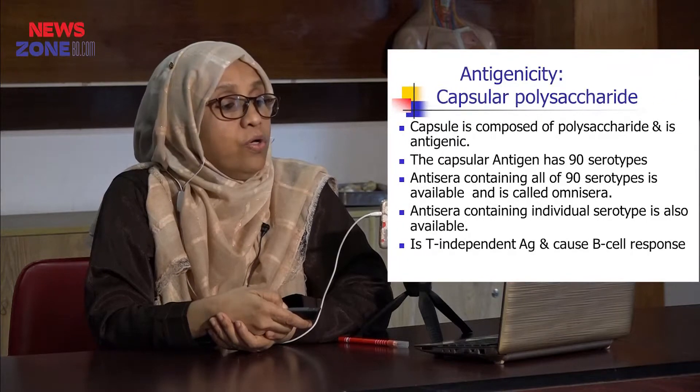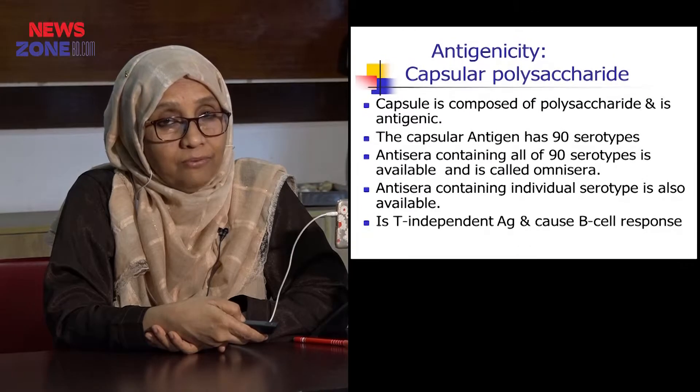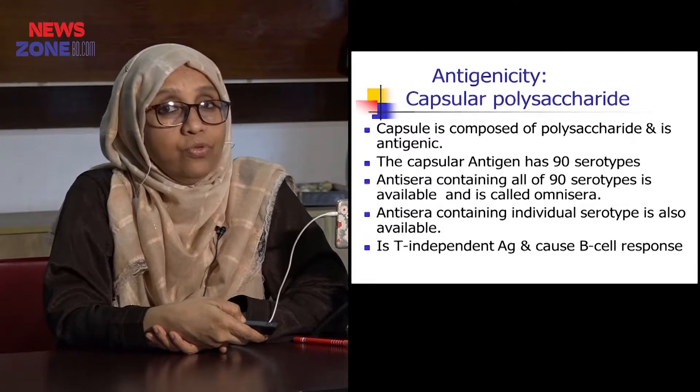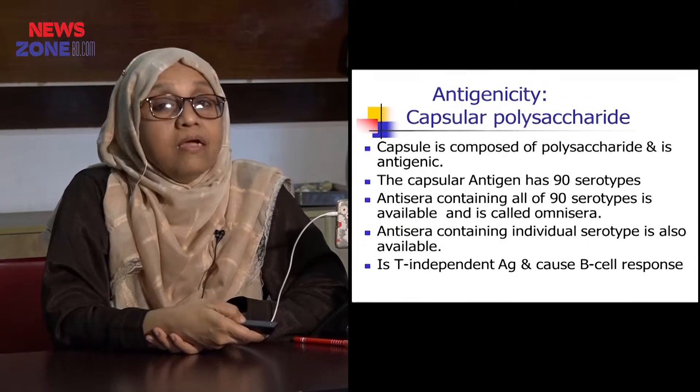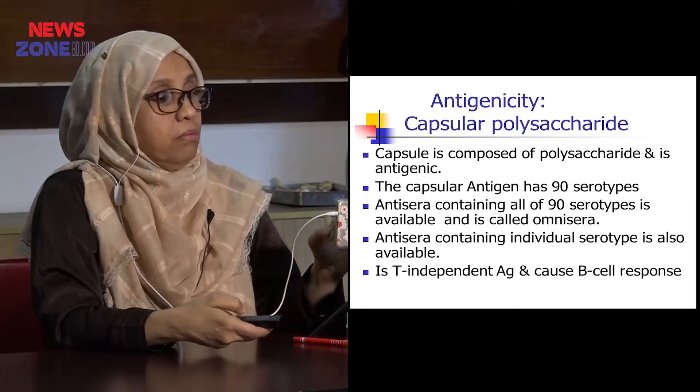When antisera containing all 90 serotypes is available, it is called Omnisera — all these serotypes together in one serum. Antisera containing individual serotypes is also available. We should remember that Streptococcus pneumoniae is a prototype example of capsular-type gram-positive cocci, and this polysaccharide capsule is a T-independent antigen. So when it produces an immune response, it gives rise to only immunoglobulin M, not immunoglobulin G.